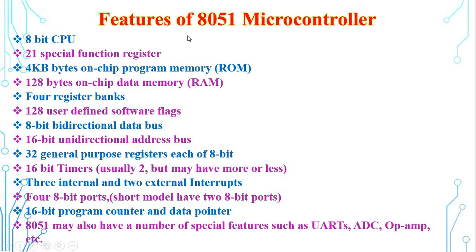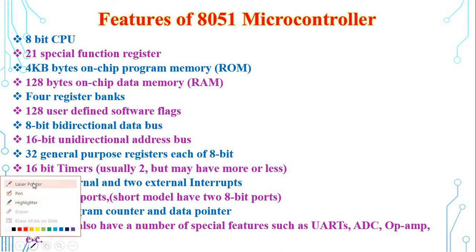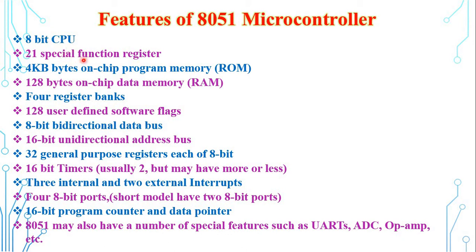The features of the AT51 microcontroller are: 8-bit CPU, 21 special function registers, 32 bidirectional IO lines, 64 kilobytes address space for program memory, 64 kilobytes address space for external data memory, 4 kilobytes of on-chip ROM program memory, 128 bytes of on-chip RAM data memory, 4 register banks, 16-bit timers/counters, high-speed programmable serial port, powerful bit processing capability, and a five-source interrupt structure.